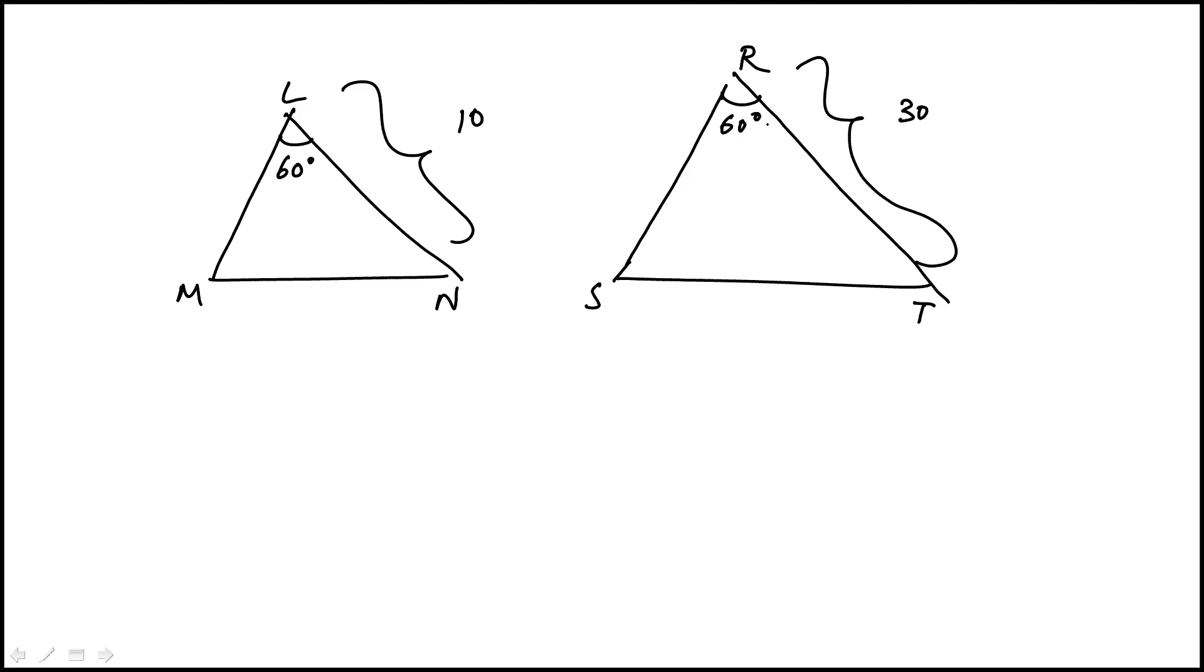So three times that, this angle is the same. The question is which additional piece is sufficient to prove that triangle LMN is similar. Option A: ST is 7.